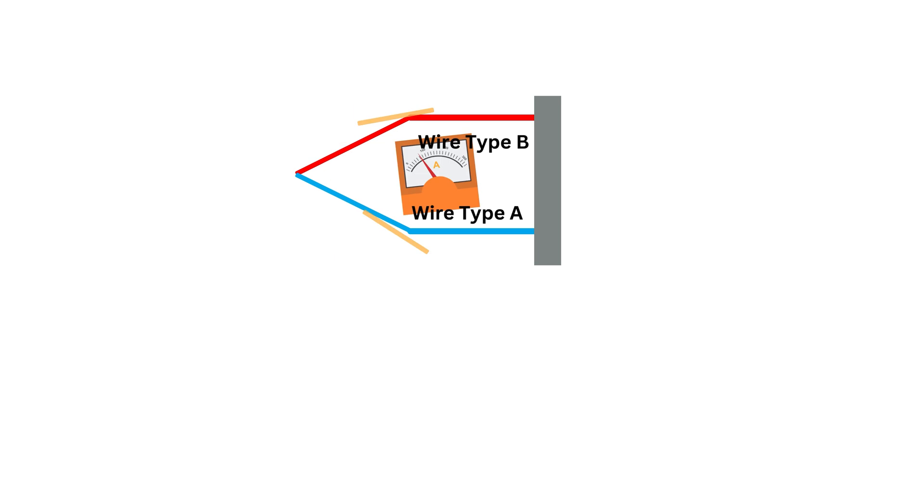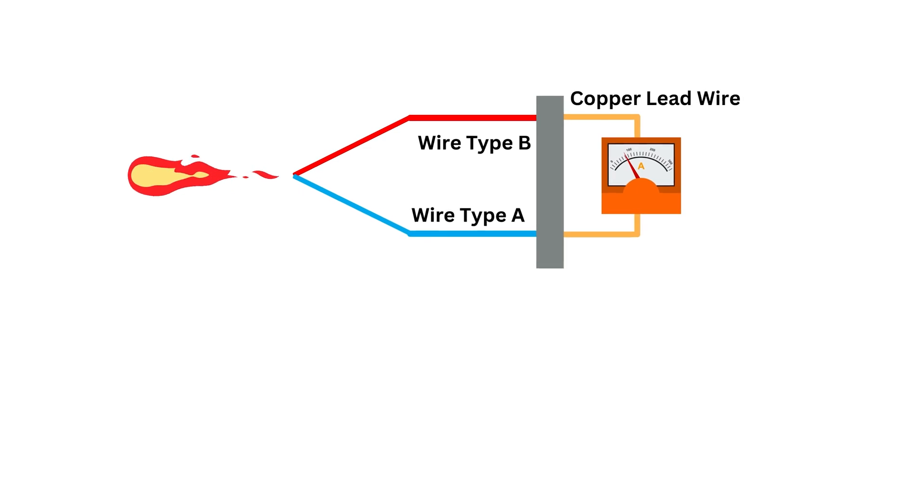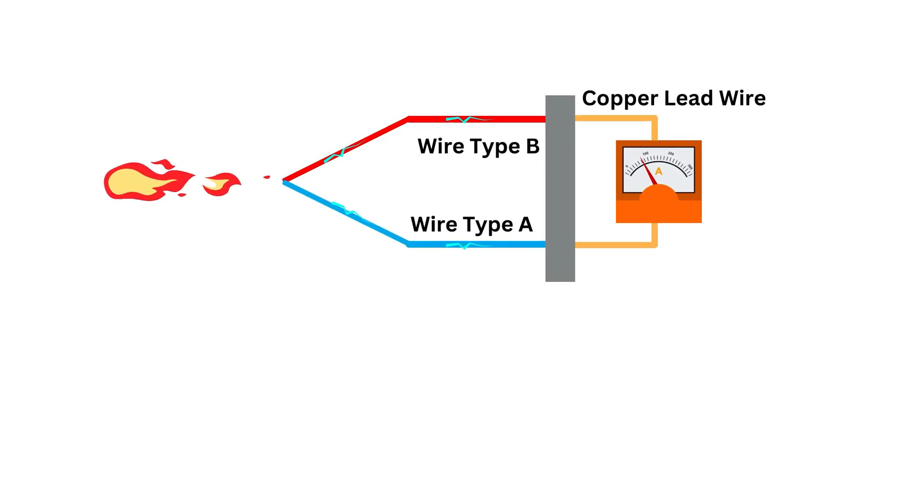What is the working principle of thermocouple? When two wires composed of dissimilar metals are joined at both ends and one of the ends is heated, there is a continuous current which flows in the thermoelectric circuit. This means that when the junction of the two metals is heated or cooled, a voltage is produced that can be correlated back to the temperature.